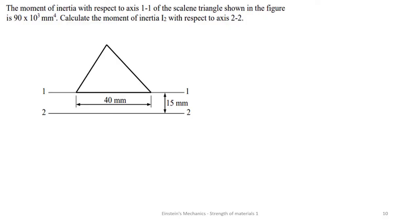The moment of inertia with respect to axis 1-1, which is the first axis of the scalene triangle shown in the figure, is 90×10³ mm⁴. We need to calculate the moment of inertia I₂₂ with respect to axis 2-2. The moment of inertia with respect to axis 1-1 is given as 90×10³.